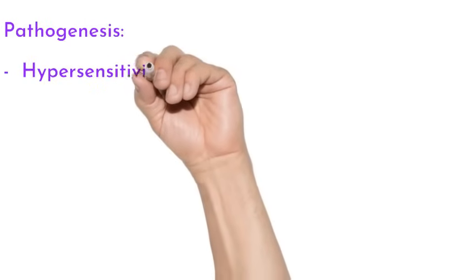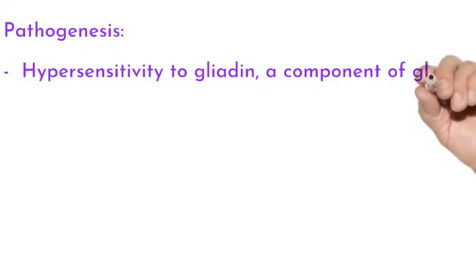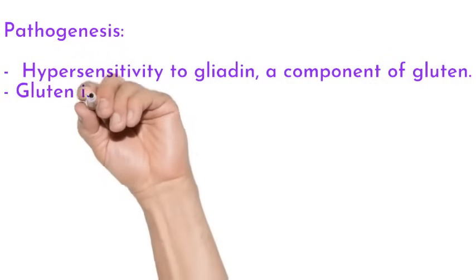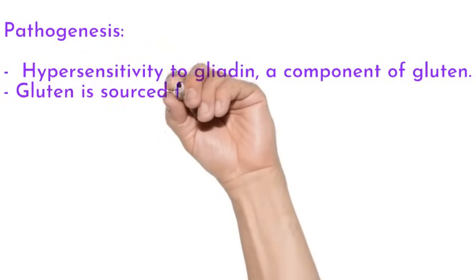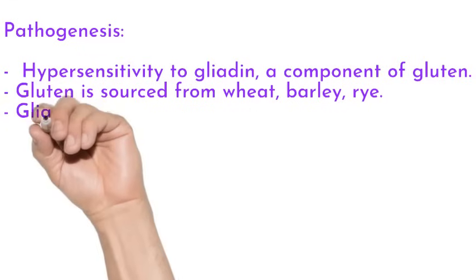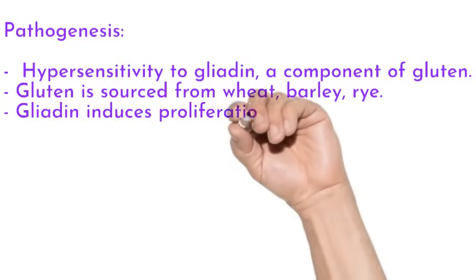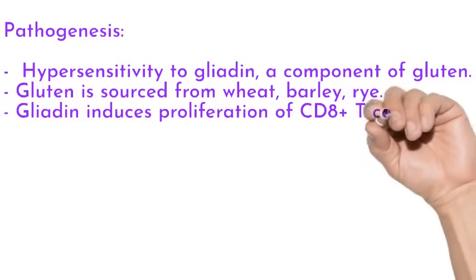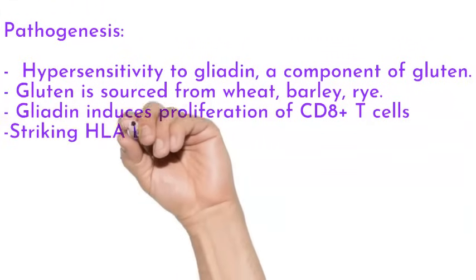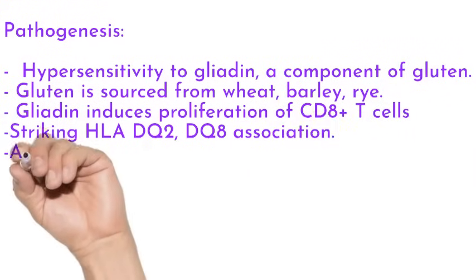Coming to the pathogenesis, it lies in hypersensitivity to gliadin, a fraction of gluten. This product is sourced from cereals like wheat, barley, and rye. When gliadin is released, it causes proliferation of CD8 T cells.